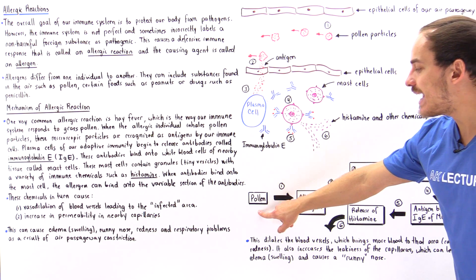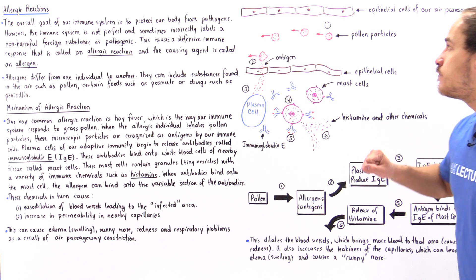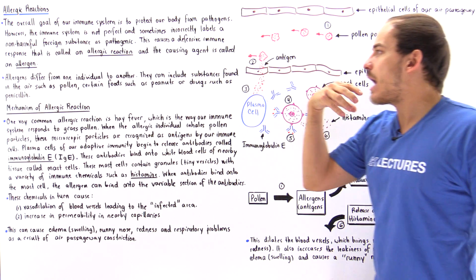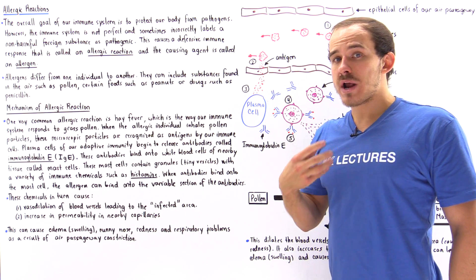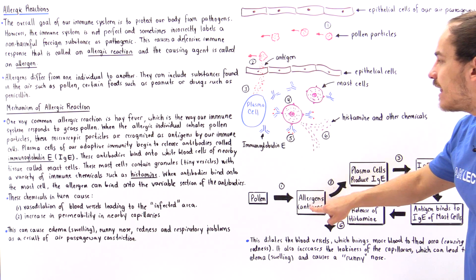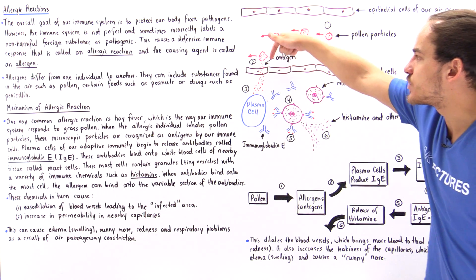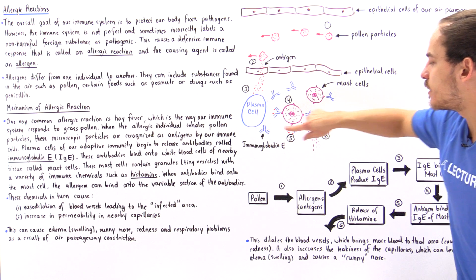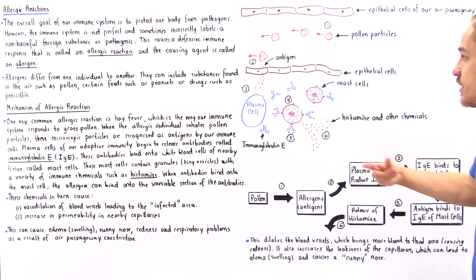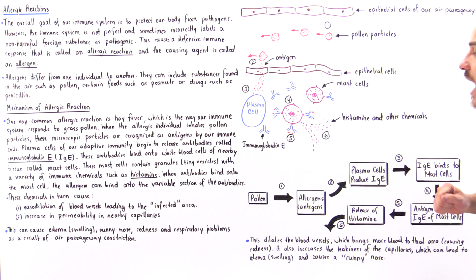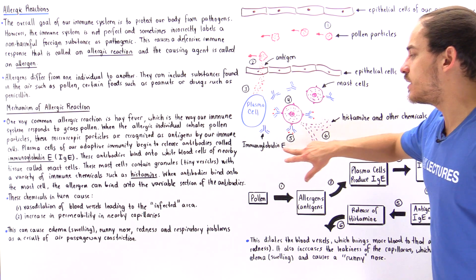So once again, tiny pollen, microscopic pollen particles enter the air passageways of our body, our nasal canal, our trachea, the bronchi and the bronchioles. And they release these tiny allergens we call antigens that flow via these epithelial cells and into our plasma cells. And the plasma cells see these antigens as pathogenic and begin producing the corresponding complementary immunoglobulin E, our antibodies.